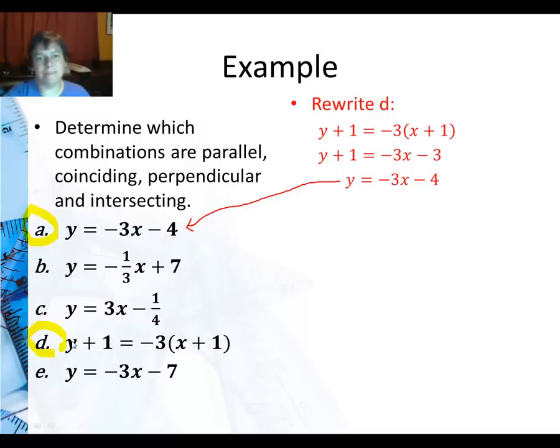So a and d are the same line. They are coinciding. But let's start going down the list. Parallel is same slope. So d and e are parallel. A and e are parallel. The only reason I'm not saying a and d are parallel is because they're the same line.